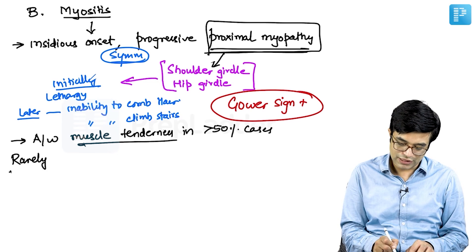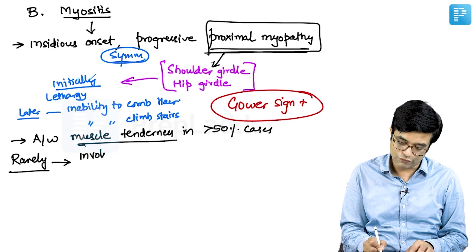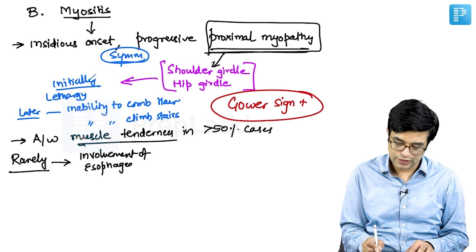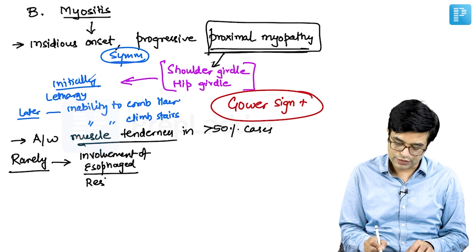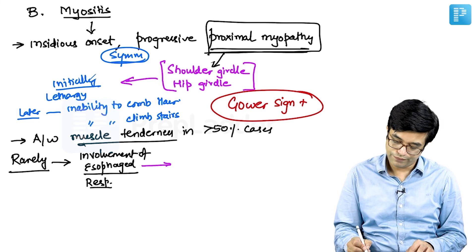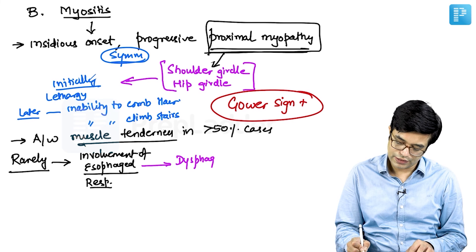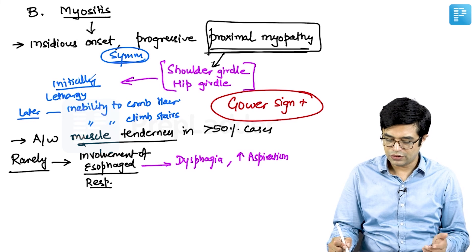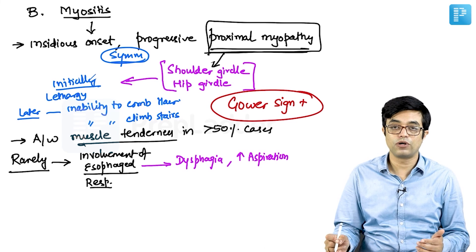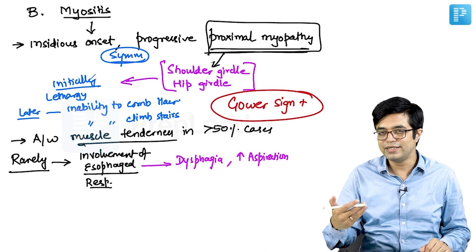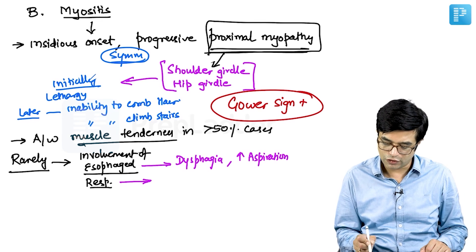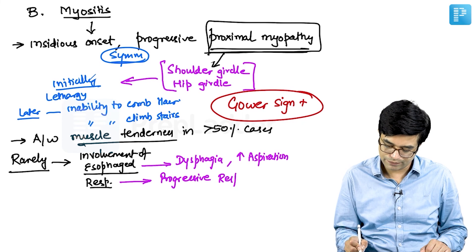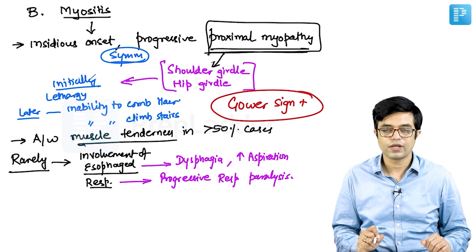Rarely you may find that the muscle weakness or myositis may involve esophageal muscles and respiratory muscles. Esophageal muscle involvement will lead to dysphagia in the patient, it can cause increased risk of aspiration and many times although not exactly clear but upper respiratory muscle involvement or pharyngeal involvement can produce a denasal voice as well, we call it as dysphonia. Respiratory muscle involvement can lead to progressive respiratory paralysis.